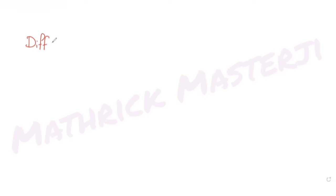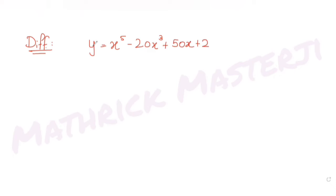Today's question is from the topic of differentiation. The question asks us to find the number of points where the curve y = x⁵ - 20x³ + 50x + 2 crosses the x-axis. We need to find how many times this curve intersects the x-axis.